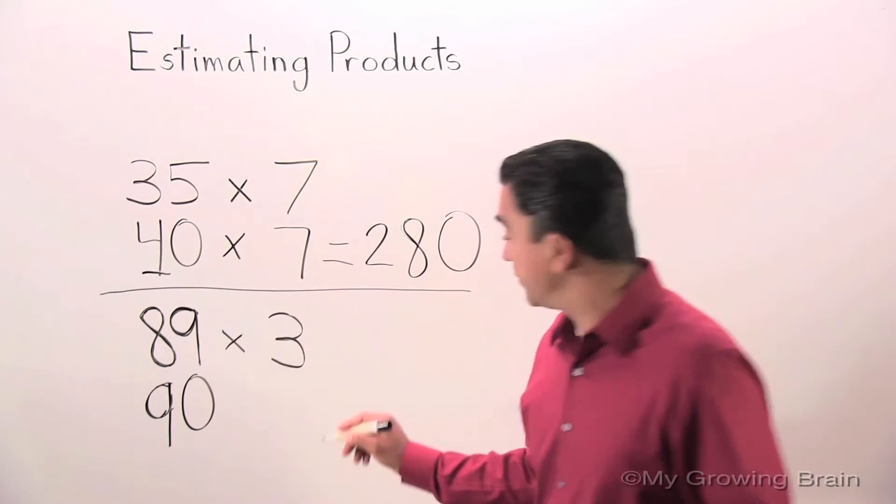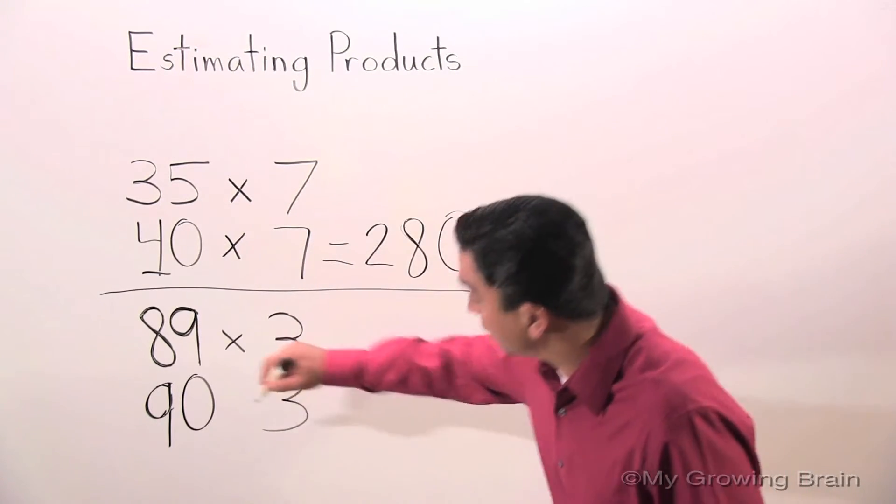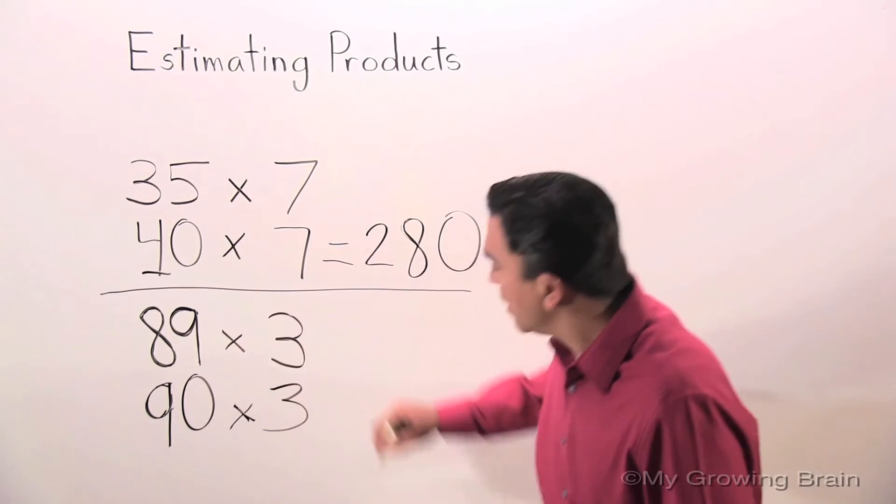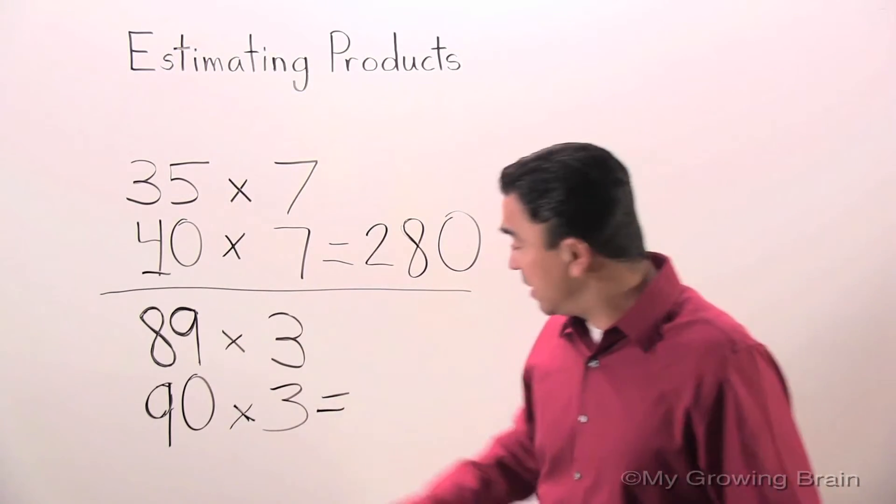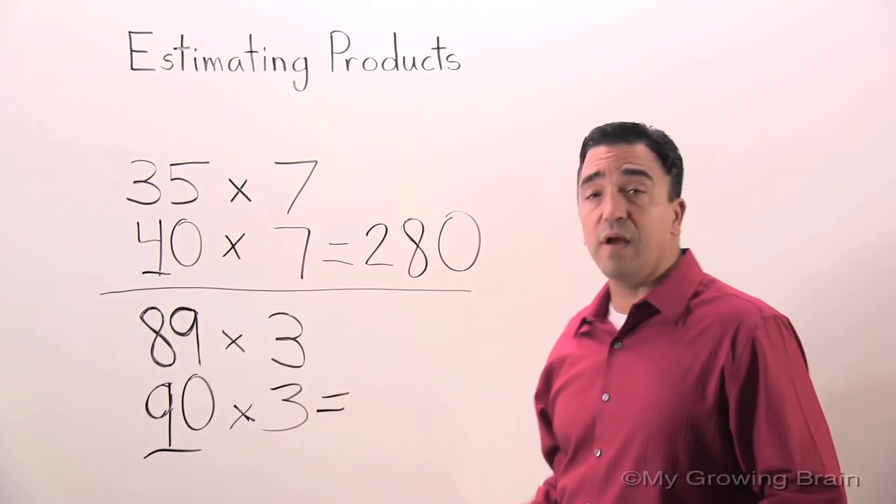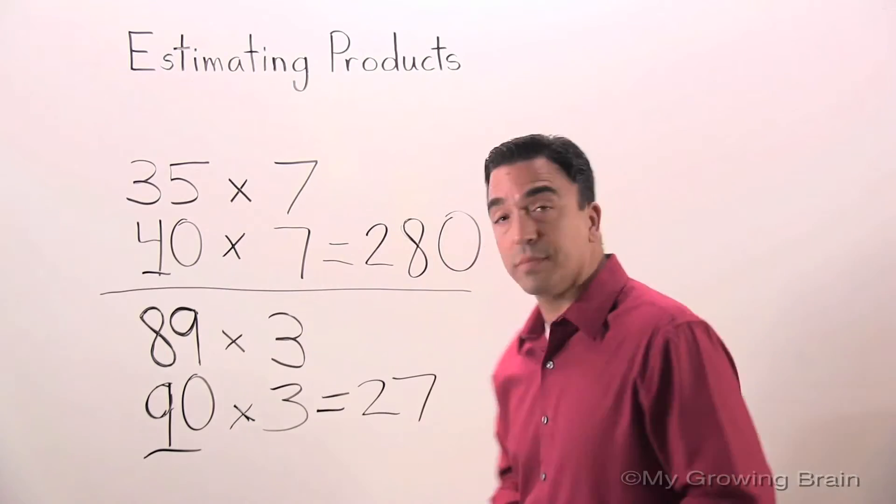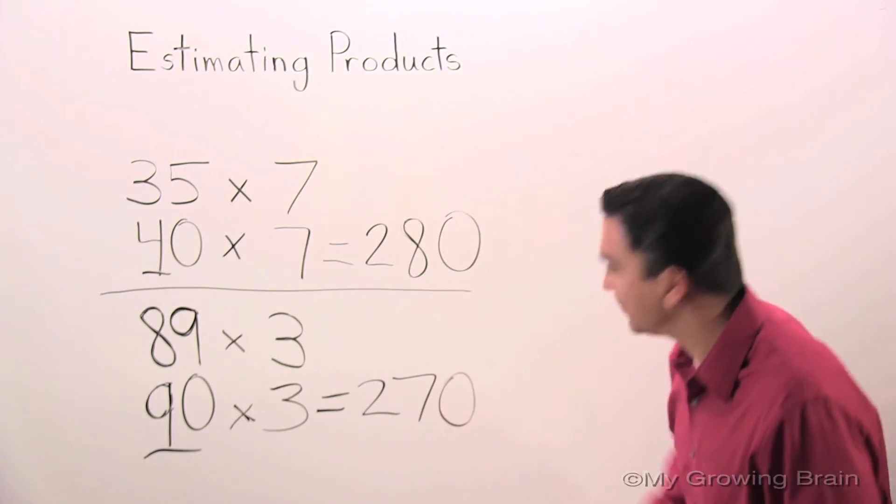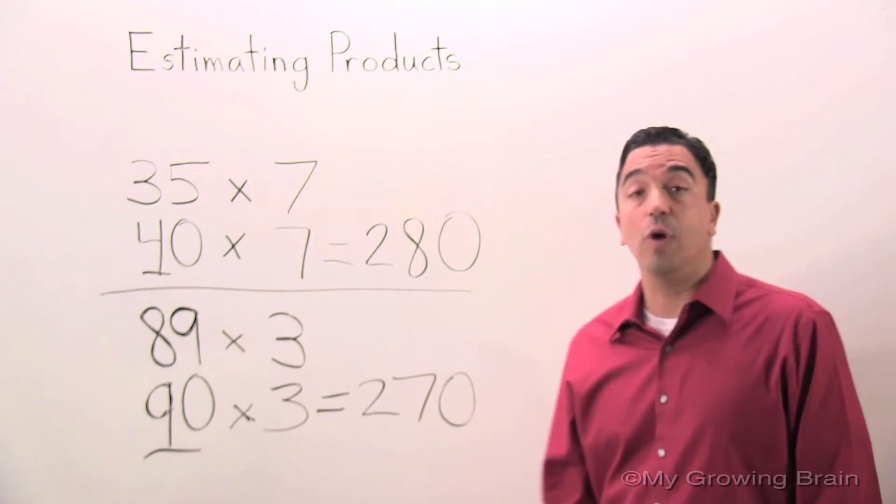I'm just going to drop the 3, multiplication sign. Once again, I'm going to multiply 9 times 3, which is 27. I'm going to grab my 0. 90 times 3 equals 270.